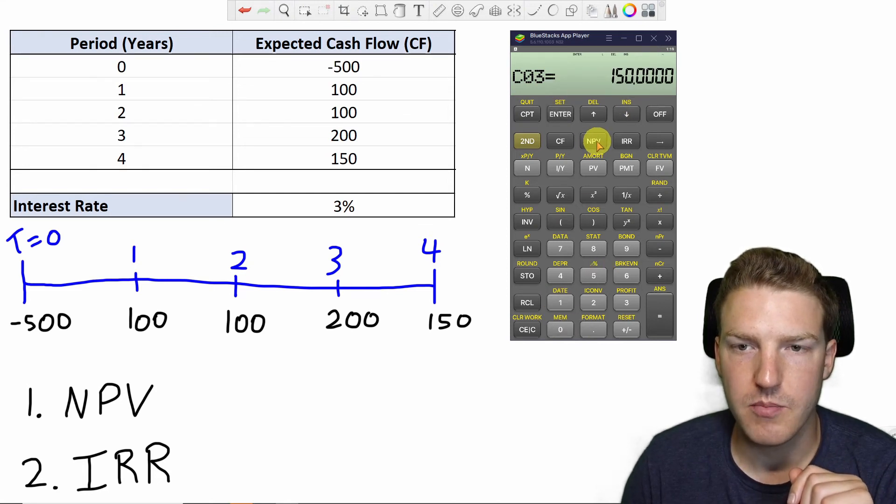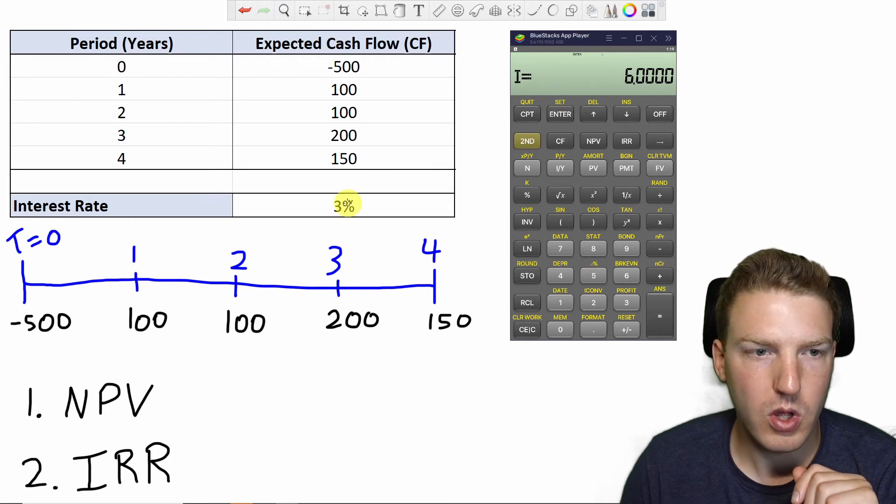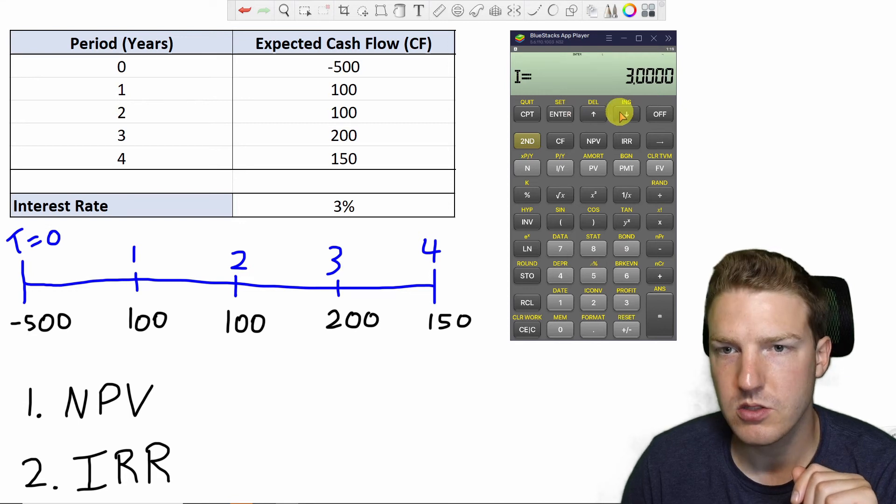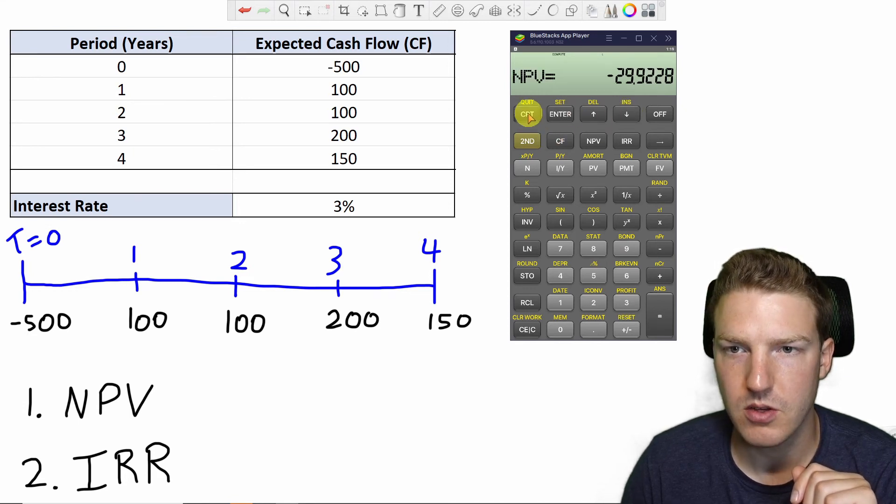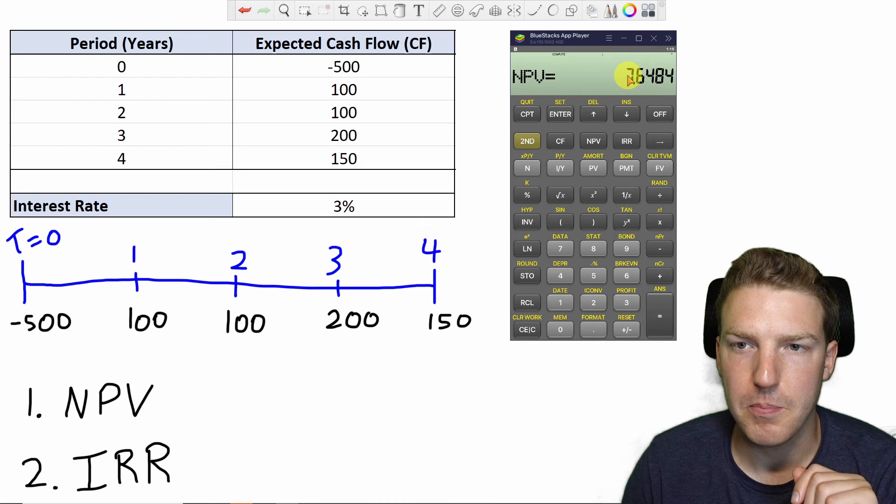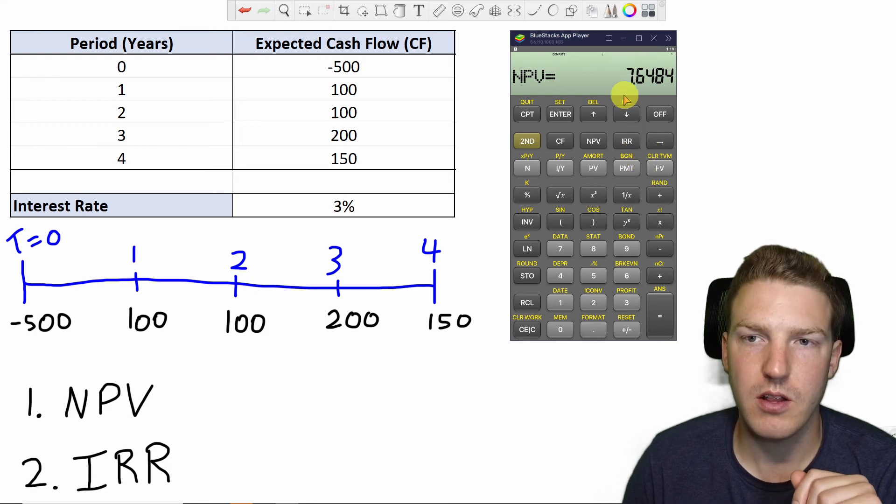Now we can go over to NPV. And then we'll have to put in our interest rate. So we're using an interest rate of 3%. So we'll hit three, enter, and then the down arrow, and then compute. And we find a positive net present value of $7.64.